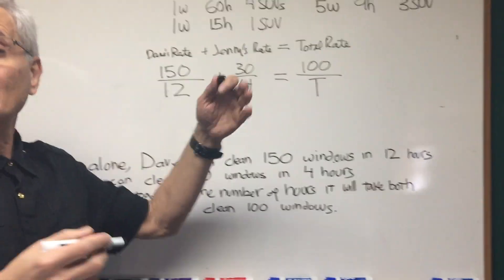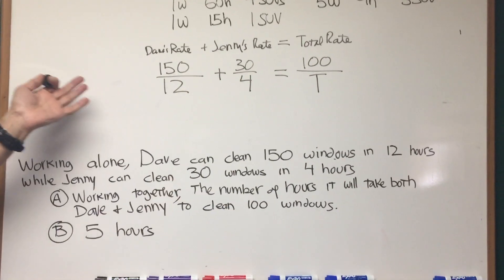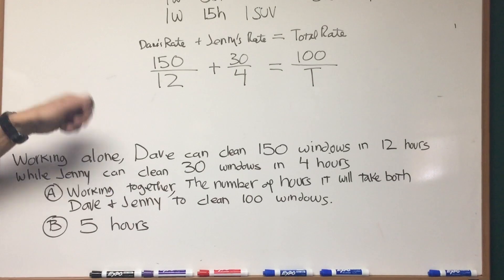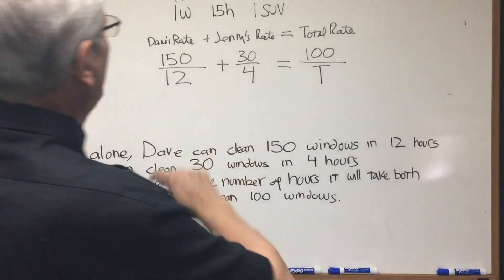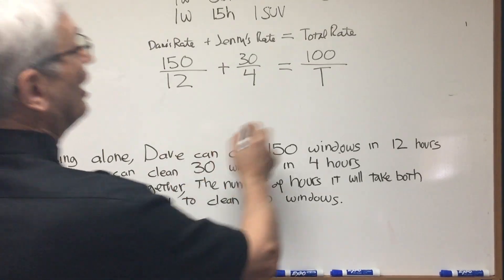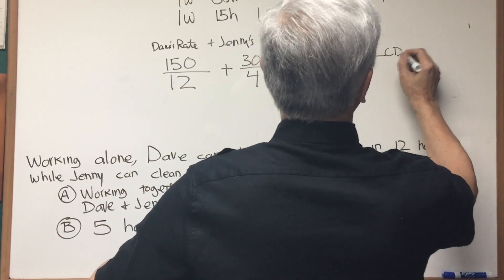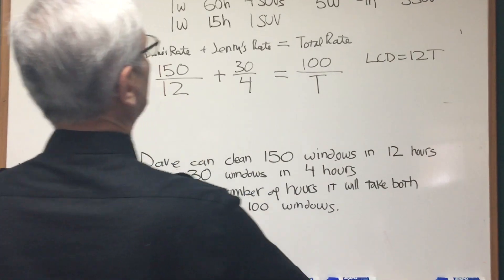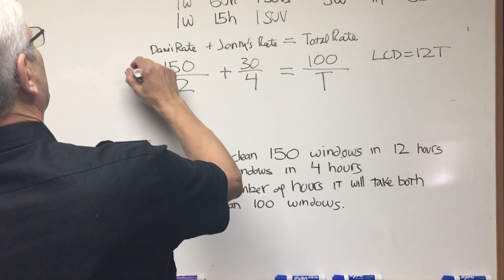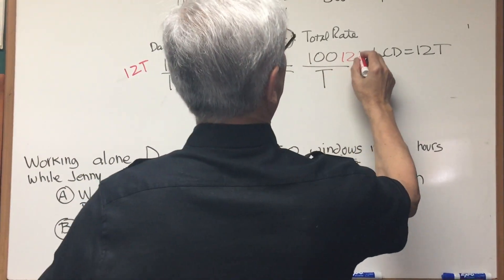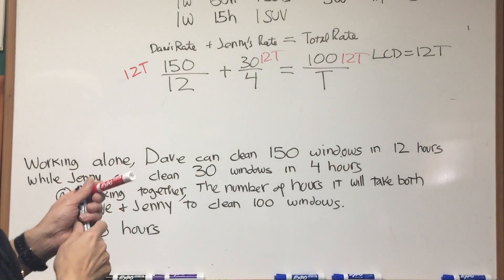Well, look, the problem is over. This is the setup of the problem. All we have to do is turn the crank. So let's just simplify this expression. Let's see, we can multiply both sides of this equation by, let's see, the LCD is equal to 12T. So let's multiply each term on each side of the equation by 12T, 12T, and 12T.